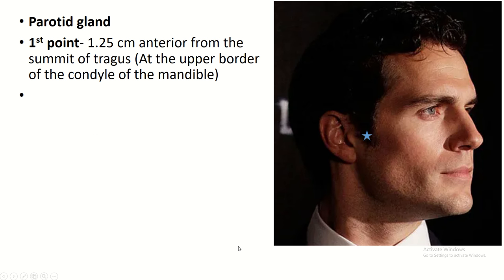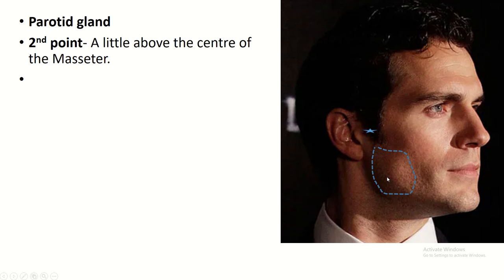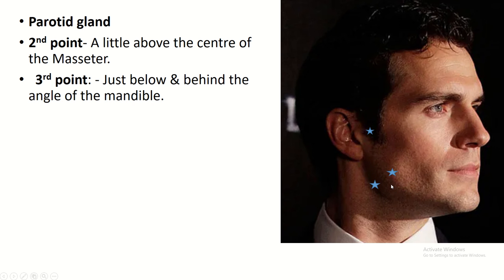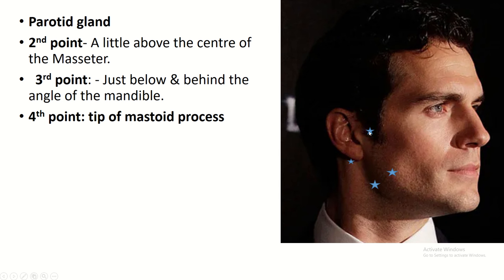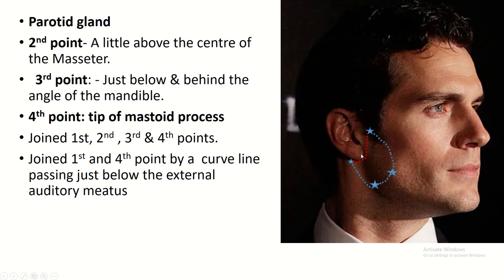Surface anatomy of the parotid gland. The first point is 1.25 cm from the summit of the tragus. The second point is a little above the center of the masseter muscle. The third point is below and behind the angle of the mandible. The fourth point is the tip of the mastoid process. Connect the first, second, third, and fourth points, then connect the first and fourth points below the auricle. This outlines the surface anatomy of the parotid gland.